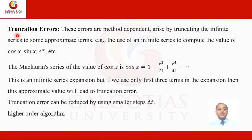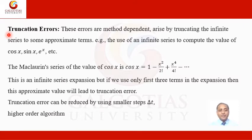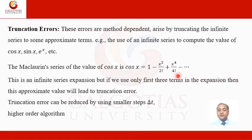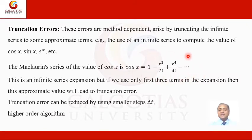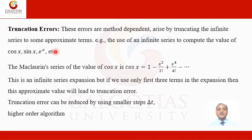The next type is truncation error, which arises by truncating an infinite series to some approximate number of terms. For example, the expansion of cos x is 1 − x²/2! + x⁴/4! − x⁶/6! + x⁸/8! and so on to infinity, but we use only 3 or 4 terms. The error due to truncating the series is called truncation error.